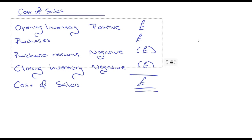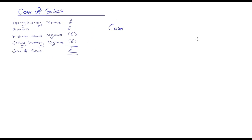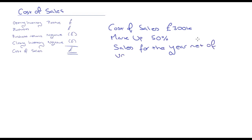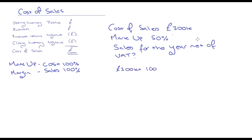Let's do a few examples. What if we have cost of sales of 300k and a markup of 50%, and we're asked to work out what the sales are for the year net of VAT? With markup, cost of sales equals 100%. So if 300k equals 100%, we take 300k divided by 100 times 150, which gives us 450k.